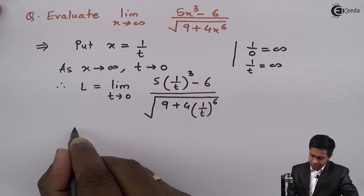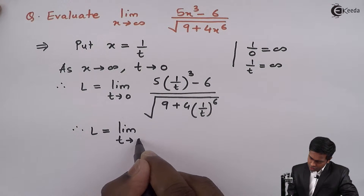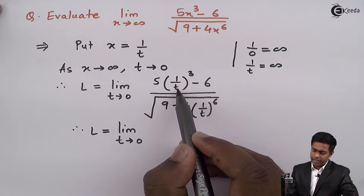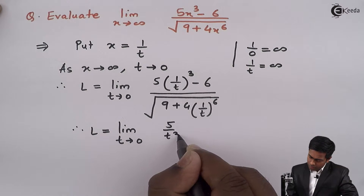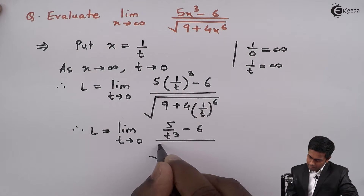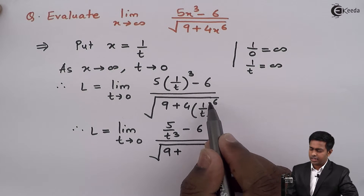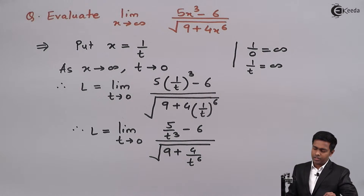So L becomes limit t tends to 0. Since 1 cubed is 1, the numerator becomes 5 upon t³ minus 6. In the denominator inside the square root we get 9 plus 4 upon t⁶, since (1/t)⁶ equals 1/t⁶.